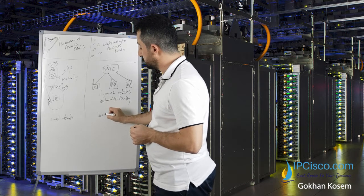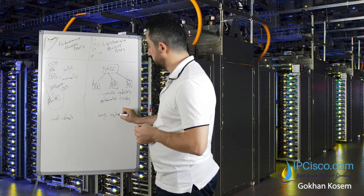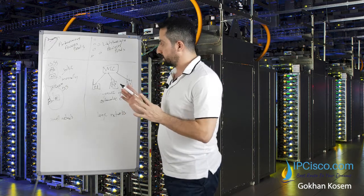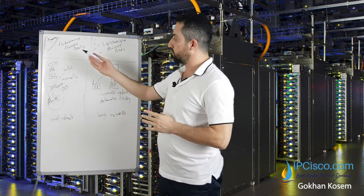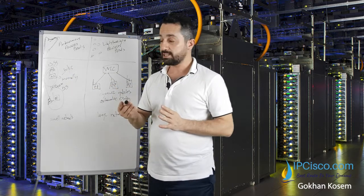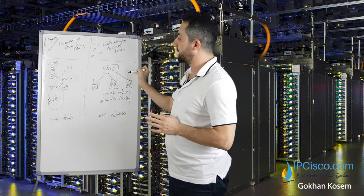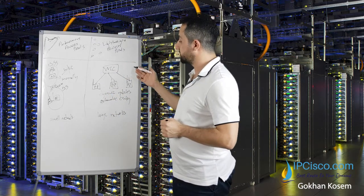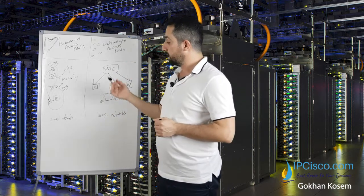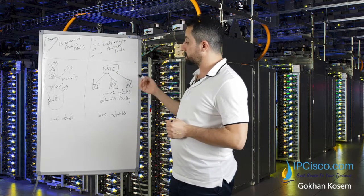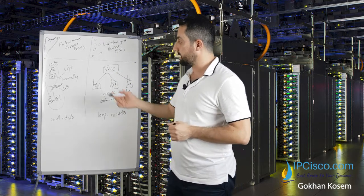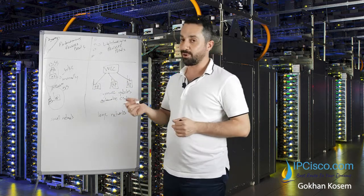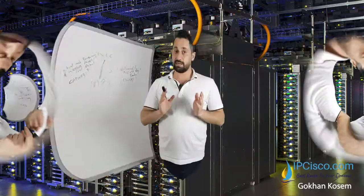This type of access point is used for large networks. To summarize: autonomous access points do not use a WLC and need manual configuration, while lightweight access points have dynamic and automatic configuration with dynamic updates. Autonomous access points are for small networks and lightweight access points are for large networks.